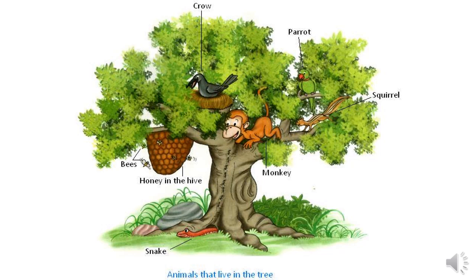Now, in this picture, what can you see? A big tree. Do you remember the word which means big? I told you in part 1 of this lesson. It is 'huge' — H-U-G-E. Huge means big. But in this tree, we can see many animals. Let's name them all first. We have bees, crow, monkey, parrot, squirrel and snake.